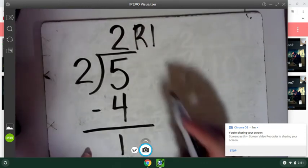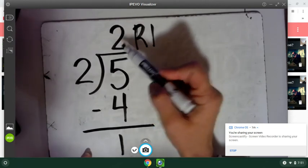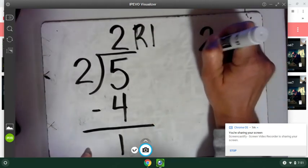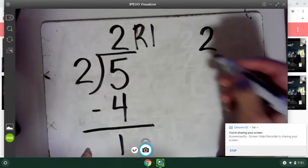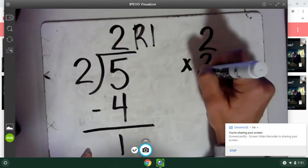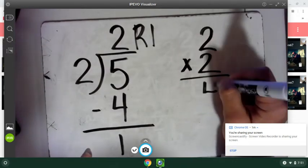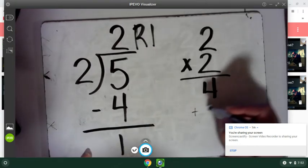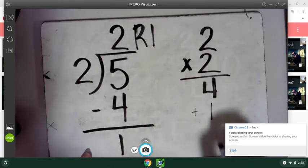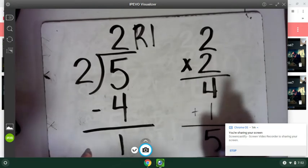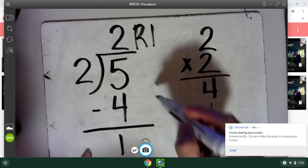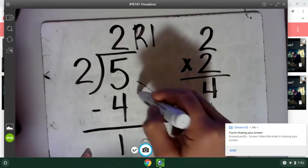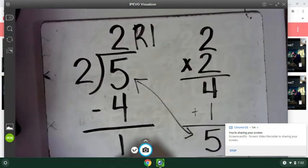So now how do we check that? Well, same part. We take the answer two and multiply it by the divisor two. That equals four, plus I have one left over, and that equals five. So if it equals the number in your box, then you are correct.